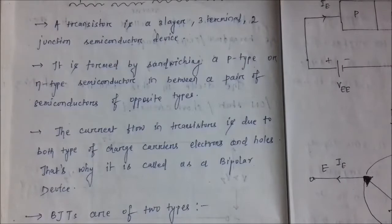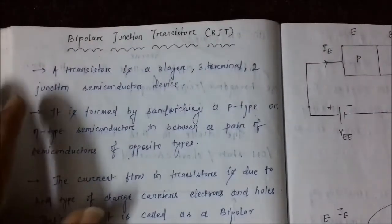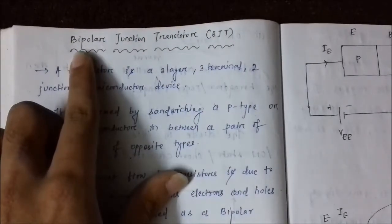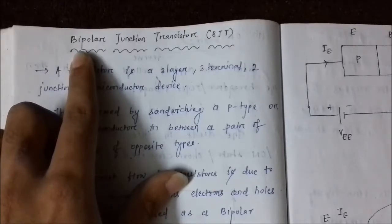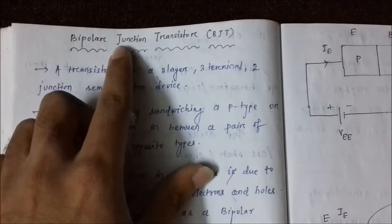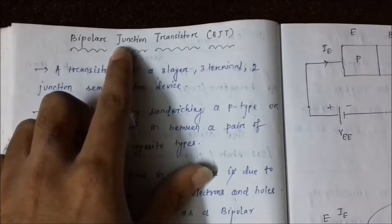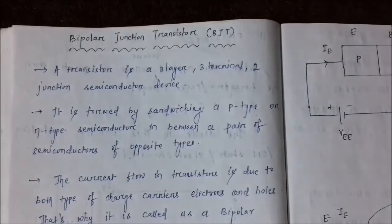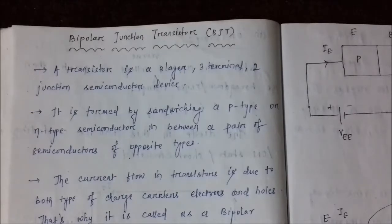There are two terms involved in BJT — bipolar junction transistor. Bipolar because it involves the movement of both electrons and holes, and as two junctions are formed — one junction formed between each of the p-type and n-type opposite semiconductors — that is why it is called a bipolar junction transistor.